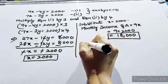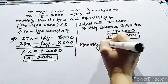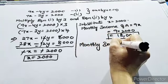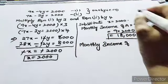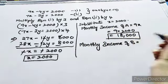So monthly income of A is 18000. So what is the monthly income of B? So what is our question? We have to find out only the monthly income of 2 persons A and B.